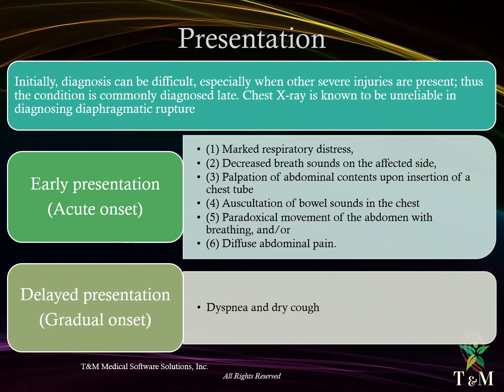Presentation: initial diagnosis can be difficult, especially when other severe injuries are present, and the condition is commonly diagnosed late. Chest X-ray is known to be unreliable in diagnosing diaphragmatic rupture. Early presentation or acute onset: in these patients there is marked respiratory distress, decreased breath sounds on the affected side, palpation of abdominal content upon insertion of a chest tube, auscultation of bowel sounds in the chest, paradoxical movement of the diaphragm with breathing, and/or diffuse abdominal pain.